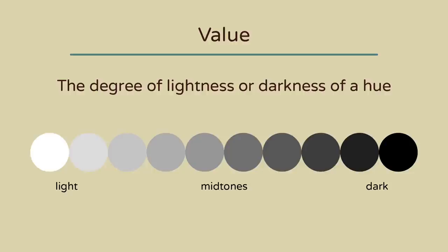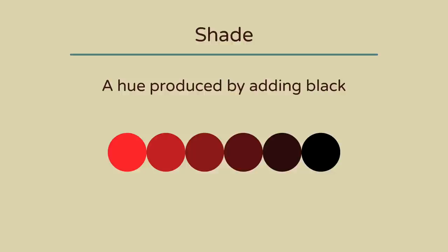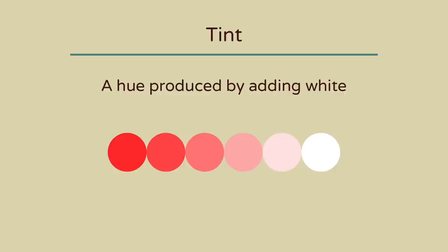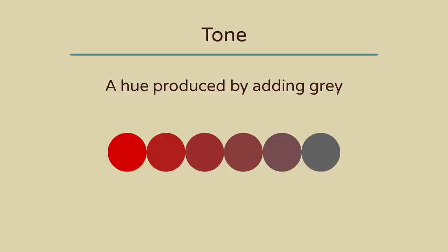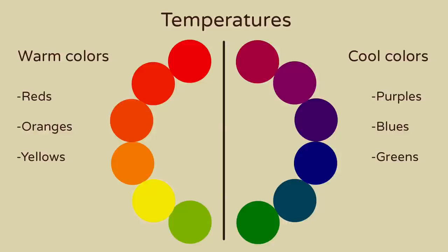Value refers to the degree of lightness or darkness of a hue. This value scale shows you a full range of values. A shade is a hue produced by adding black, so here you have a variety of shades of red made by mixing the red with increasing amounts of black. A tint is a hue produced by adding white, so now you have a variety of red tints made by mixing the red with increasing amounts of white. A tone is a hue produced by adding gray, so now you have a variety of red tones made by mixing red with increasing amounts of gray.